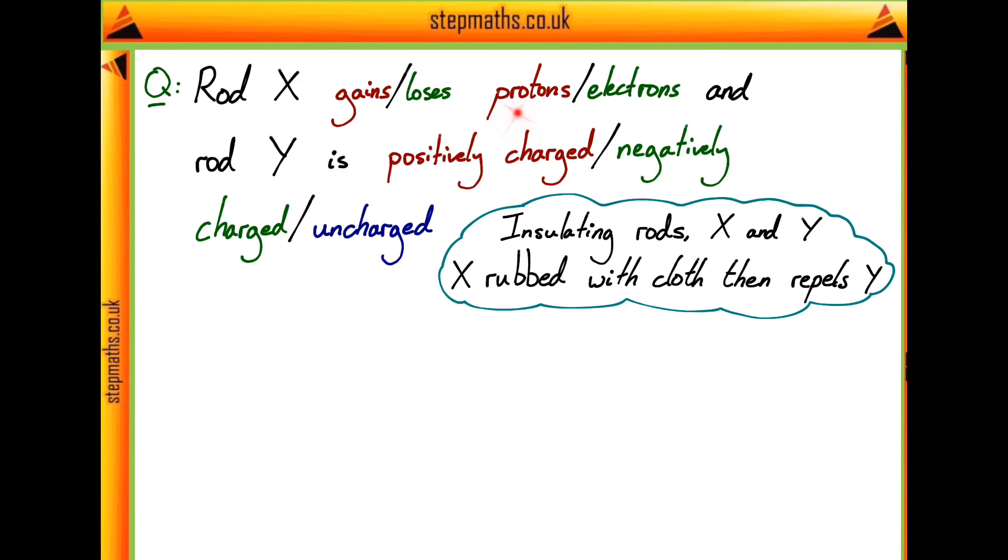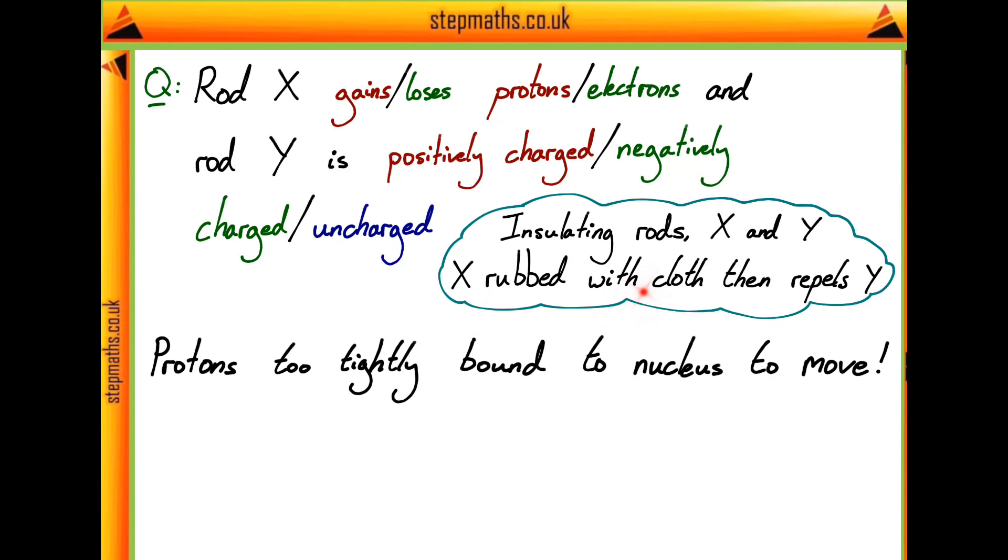And they're actually bound really tightly inside the nucleus. And you couldn't just remove a proton from a nucleus very easily whatsoever. So actually, they're going to be too tightly bound to be removed by just rubbing a cloth against rod X. So we know that actually the number of protons isn't going to change at all.